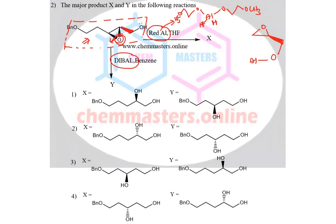In your first step, the lone pair of electrons on the hydroxy oxygen attack on aluminium, and one of the hydrides cleaves from it. In the next step, to compensate the positive charge on this oxygen, hydrogen cleaves as H⁺. So hydride and H⁺ combine to produce H₂ gas, which moves out from the reaction media. In this case, you can make a bond between aluminium and this lilac oxygen.